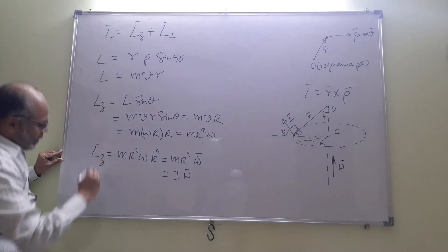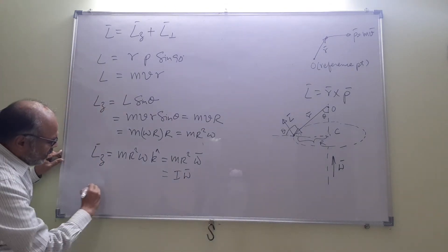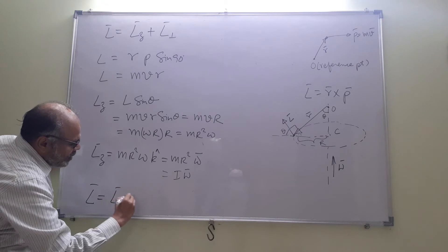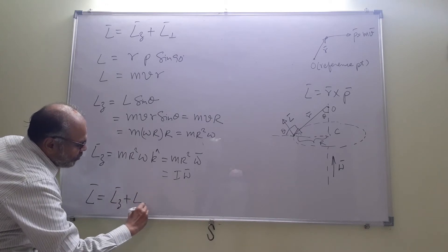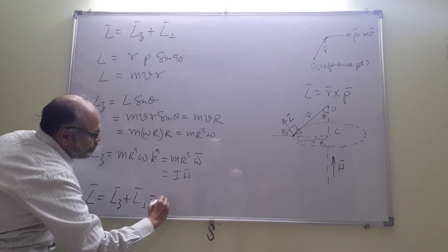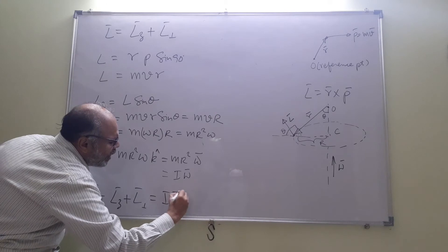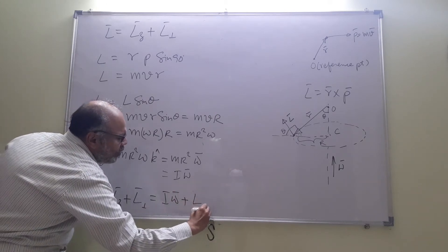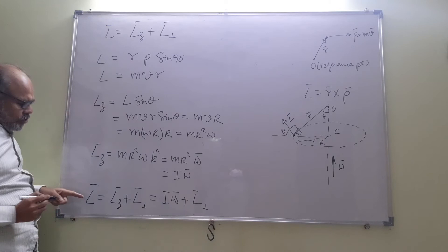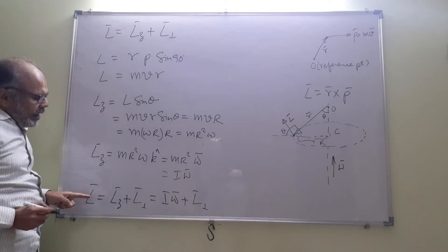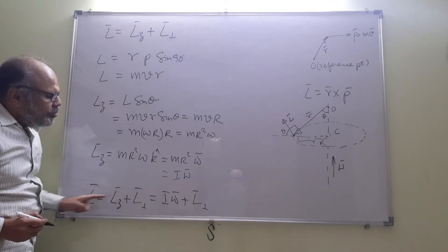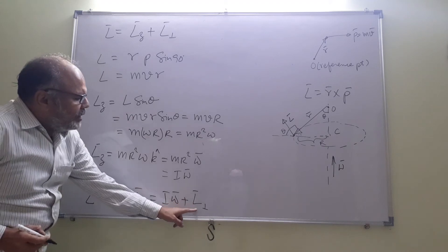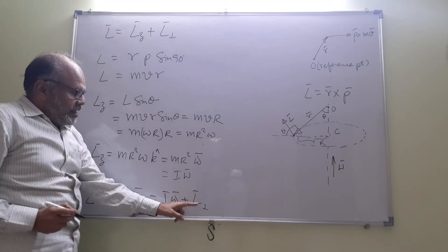Therefore, vector L = Lz + L-perpendicular = I·omega + L-perpendicular. As you can see, L and omega will not be in the same direction as long as L-perpendicular exists.